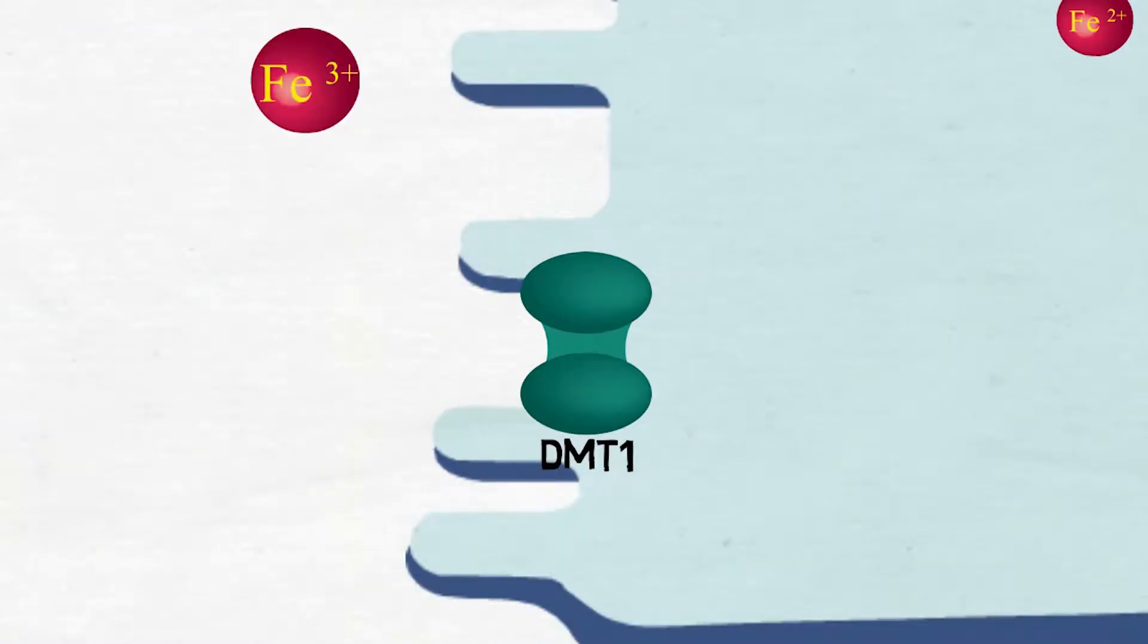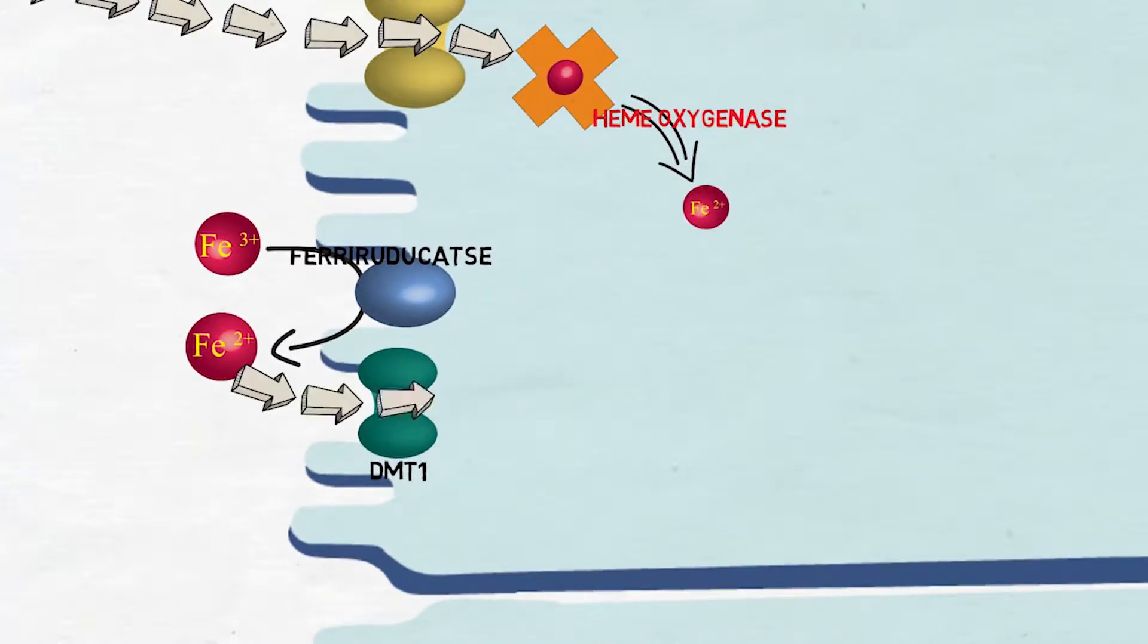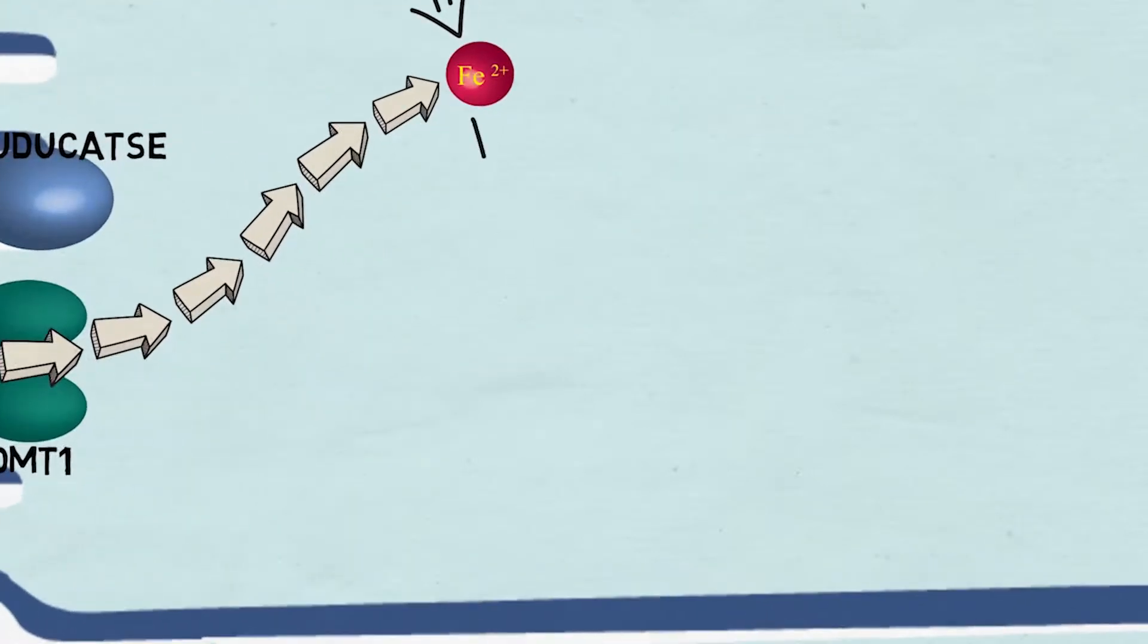So the ferric ions have to be reduced to ferrous ions. This action is performed by the enzyme ferrireductase present on the apical surface of the enterocyte. Then the ferrous ions travel through the DMT1 into the enterocyte.